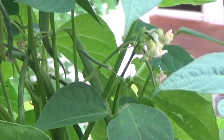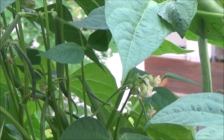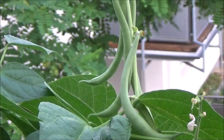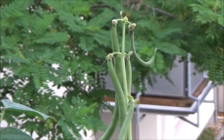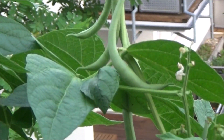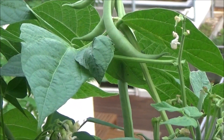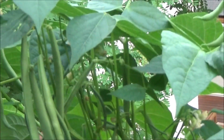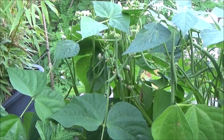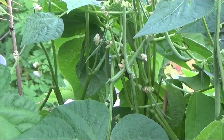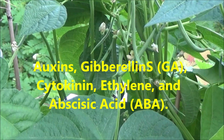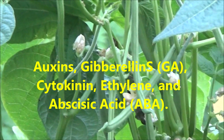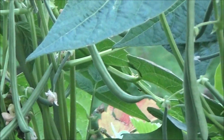Cytokinins are present in all plant tissue, but most abundantly in root tips, shoot apex, and immature seeds. Altogether, there are five groups of plant growth-regulating compounds important to plant growth: auxins, gibberellins, cytokinin, ethylene, and abscisic acid. Some of the plants containing these growth hormones include spinach, oats, and onion.